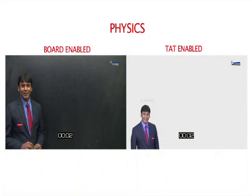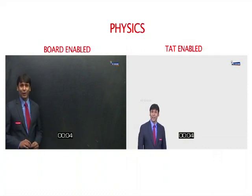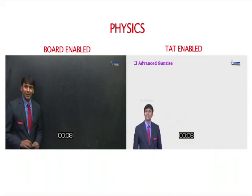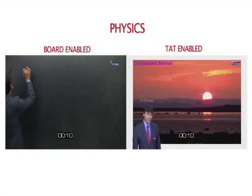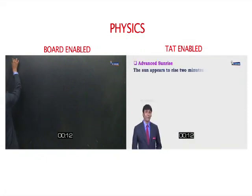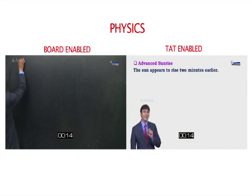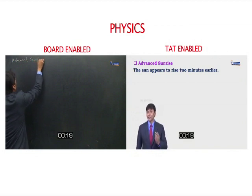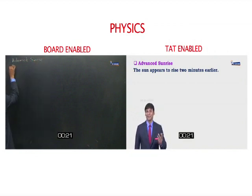Hello students, let us understand a very interesting and beautiful section of this chapter, and this is Advanced Sunrise. Now students, what is Advanced Sunrise? It means the sun appears to rise two minutes earlier. That means the sun has not risen but still we are able to see the sun. Let us see how this happens.